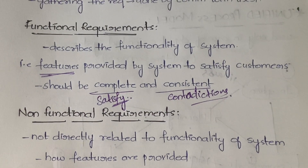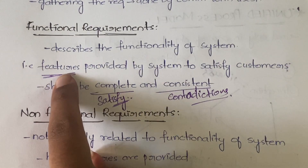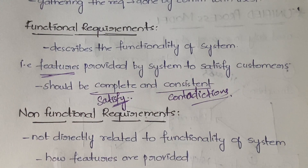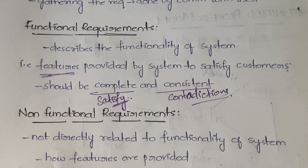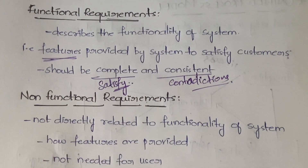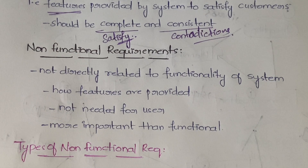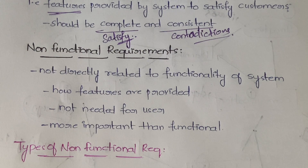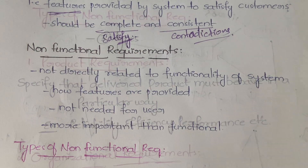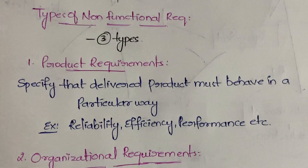The main difference: functional requirements give you the features provided by the system, whereas non-functional requirements explain how those features are provided — which is abstracted away from the customer. Under functional requirements we don't have subcategories, but in non-functional requirements we have three subcategories.